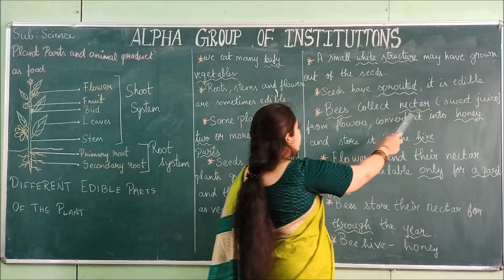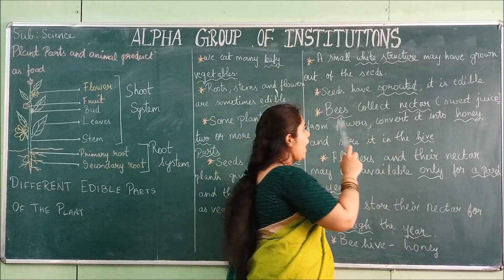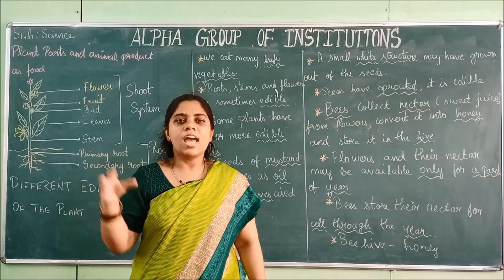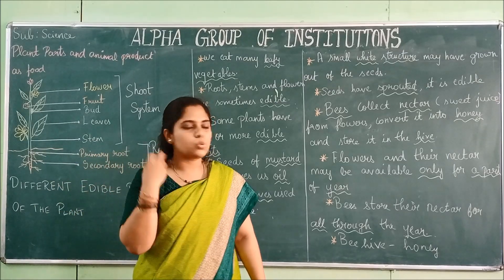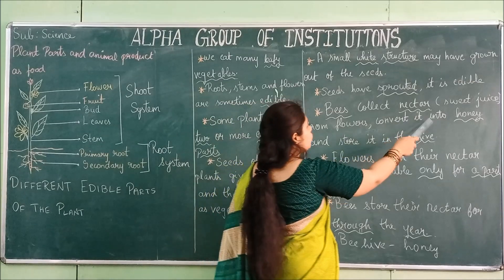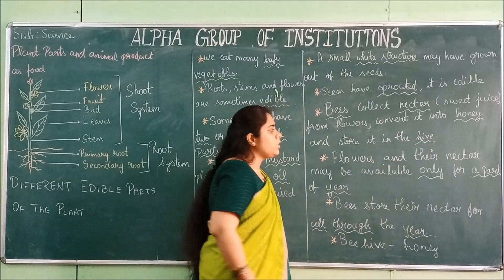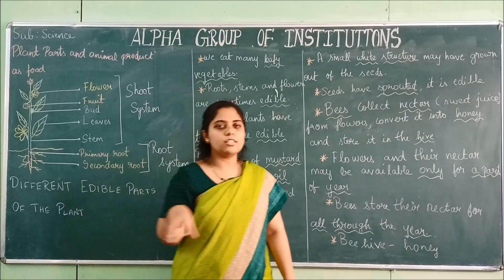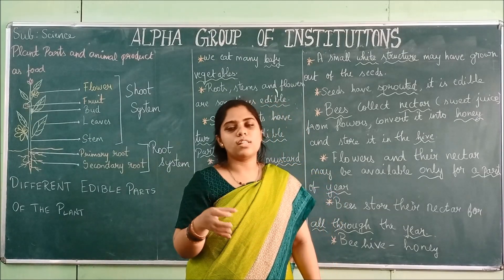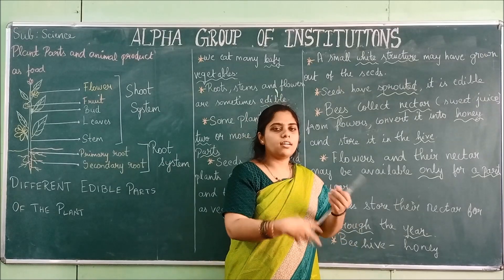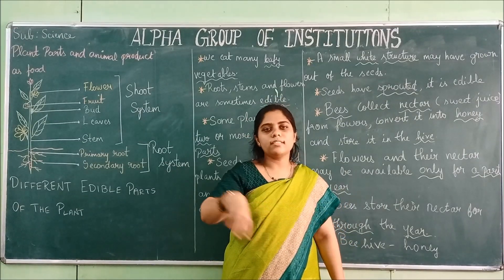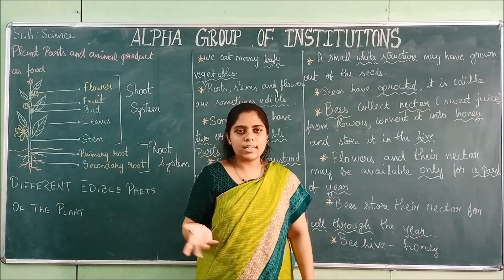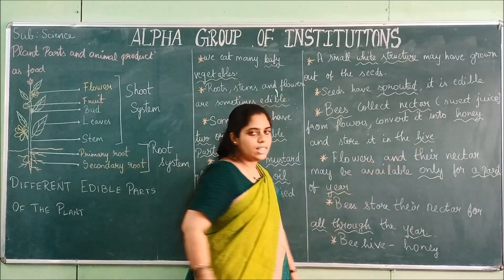Now moving on to animals — bees collect nectar, which is the sweet juice from flowers. What bees do is go to different flowers, collect the nectar, convert it into honey, and store it in their beehives. So bees suck the sweet juice from the flower, come to the beehive, convert that nectar into honey, and store it there.